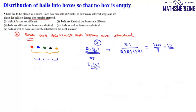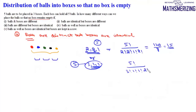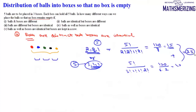Now in the same way we need to distribute five objects in a group of 3, 1, 1. So it will be 5! divided by (3! × 1! × 1!), and since the two groups of size 1 are identical, we again divide by 2!. So it will be 120 divided by (6 × 2), which is 10. So it will be simply 15 plus 10, and that is 25.